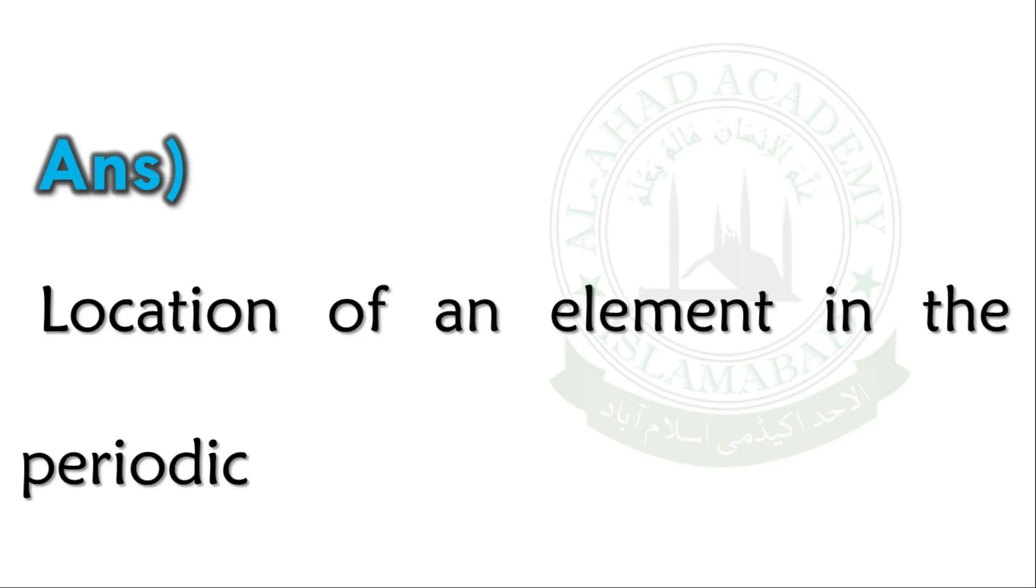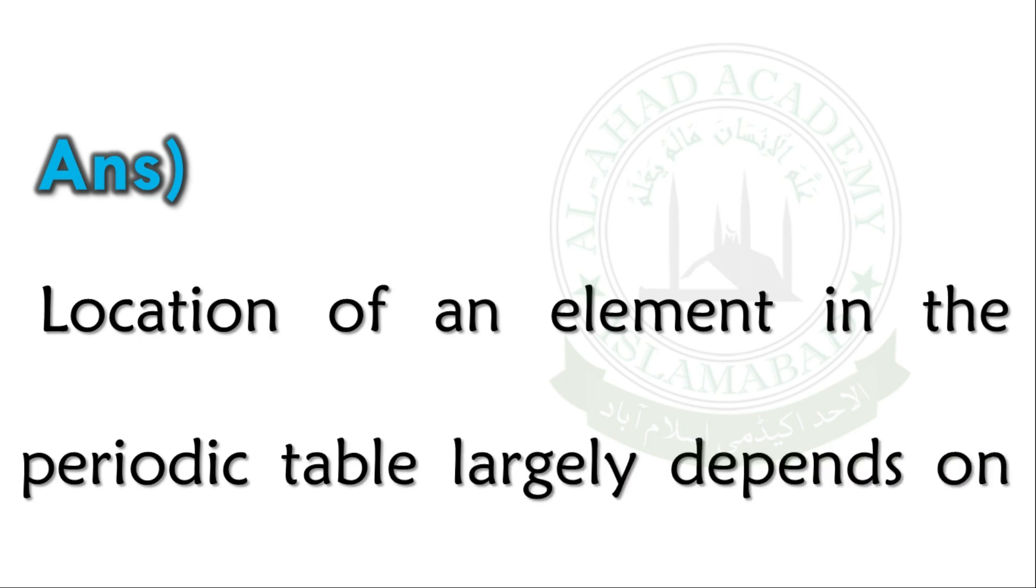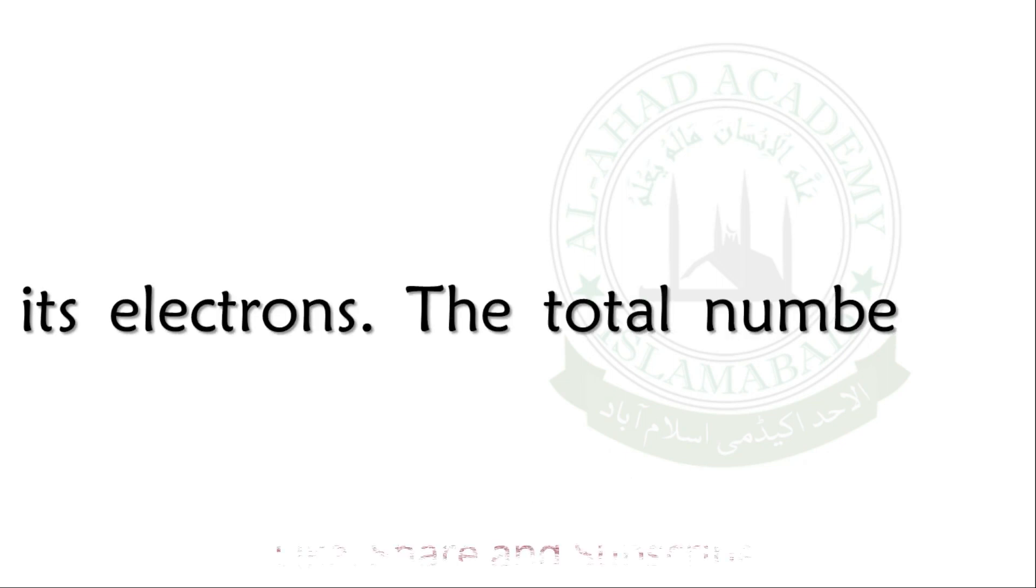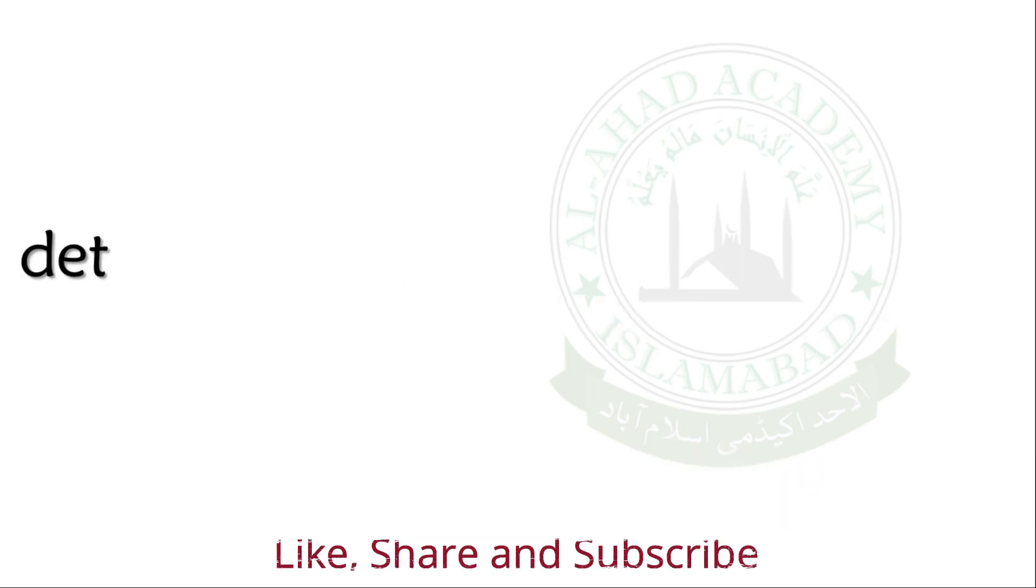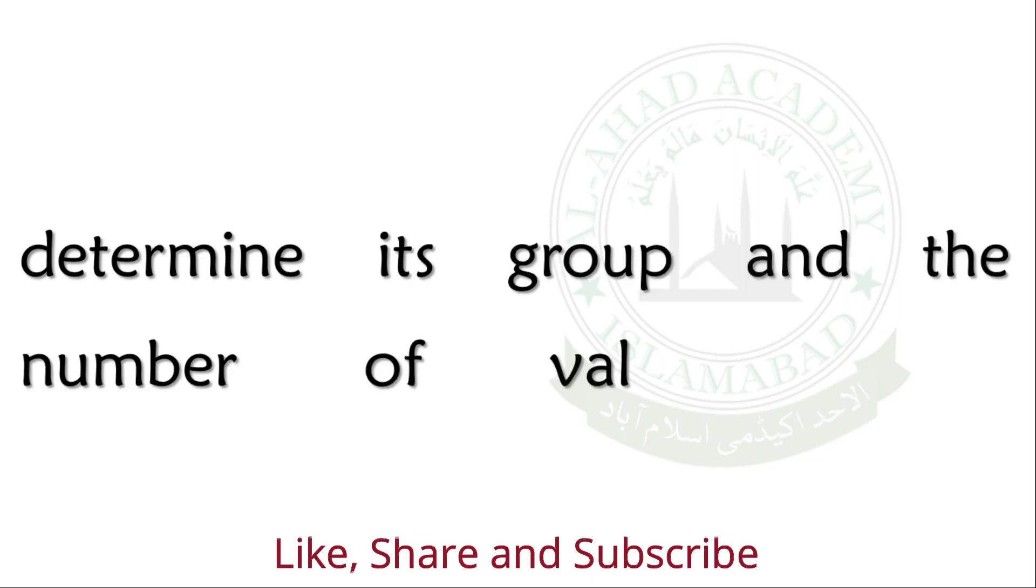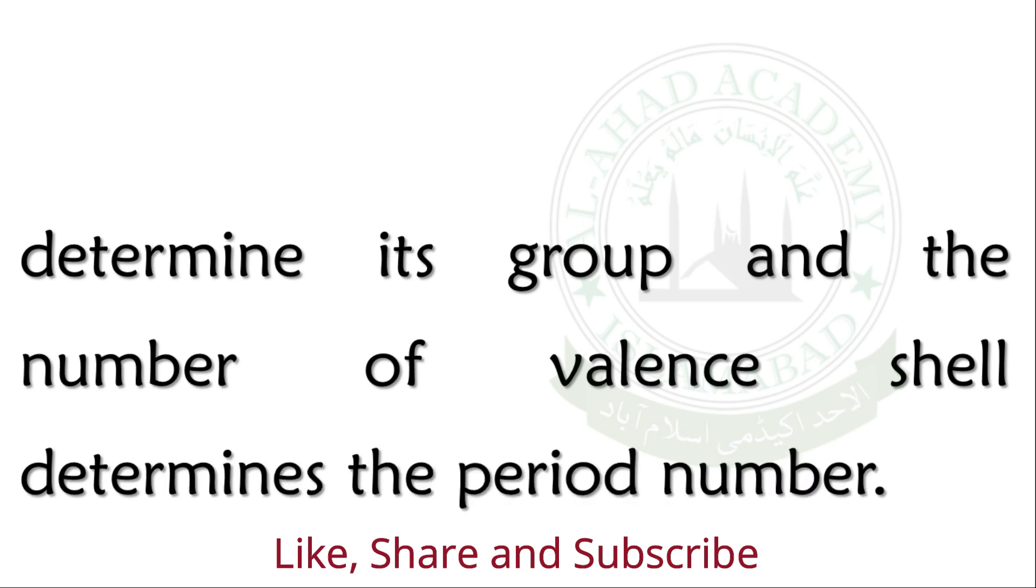Location of an element in the periodic table largely depends on its electrons. The total number of electrons in the valence shell determines its group, and the number of valence shells determines the period number.